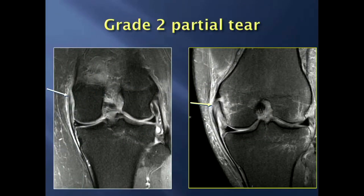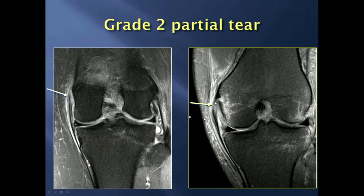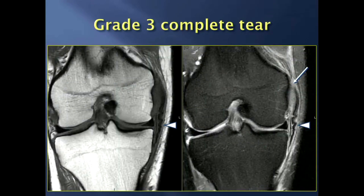A grade 2 partial tear implies you see some intact fibers but also a tear of some fibers. A common location for a grade 2 partial tear is right at the femoral origin of the MCL. Here's another example associated with a small avulsion fracture, but with a few intact fibers present — a grade 2 partial tear with avulsion fracture. For a complete tear, the best diagnostic sign is wavy MCL fibers, as the gap forms and the MCL settles with gravity, creating a wavy appearance.